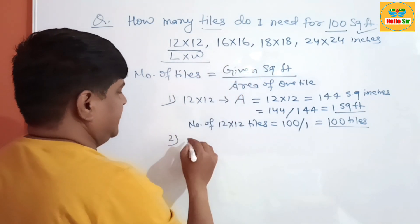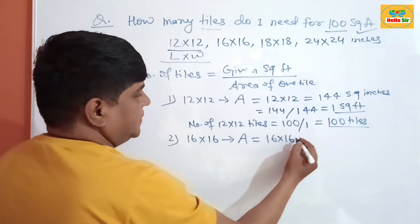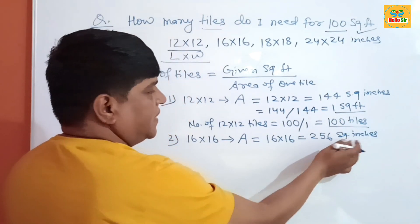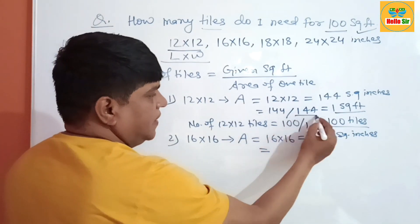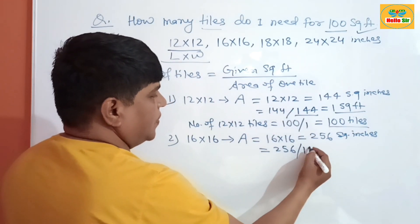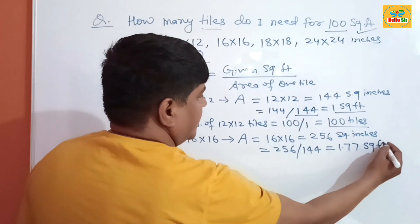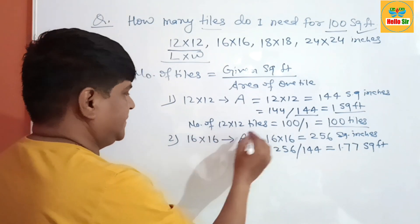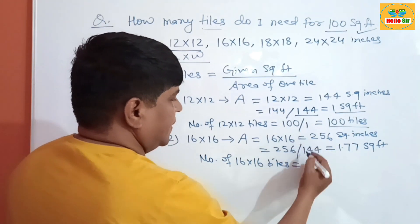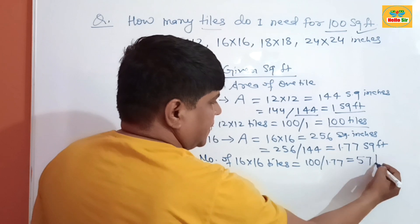Now for a 16 by 16 inch tile: first find the area of a 16×16 inch tile. Multiply both — 16 into 16 — this gives 256 square inches. To convert square inches to square feet, divide by 144. So 256 square inches divided by 144 equals 1.77 square feet. Now calculate the number of 16 by 16 tiles needed to cover 100 square feet: 100 divided by 1.77 gives 57 tiles.